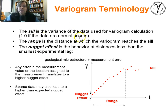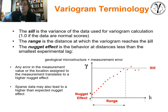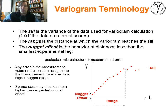The range is the distance at which the experimental variogram reaches the sill. The range is very important — beyond the range we have no correlation; we know nothing. When we get into variogram modeling, you'll find that the range is a critical parameter of the variogram models we use.